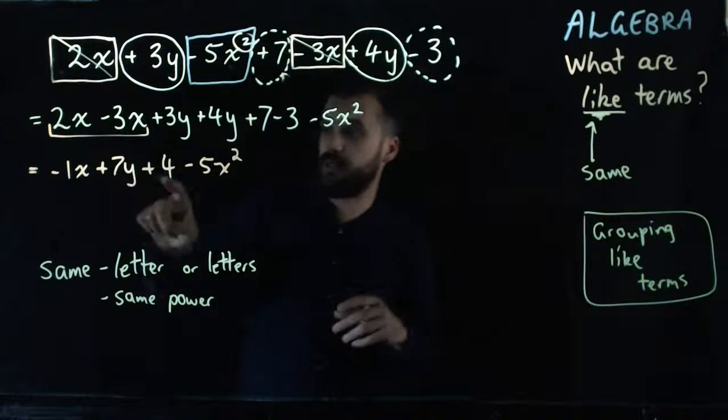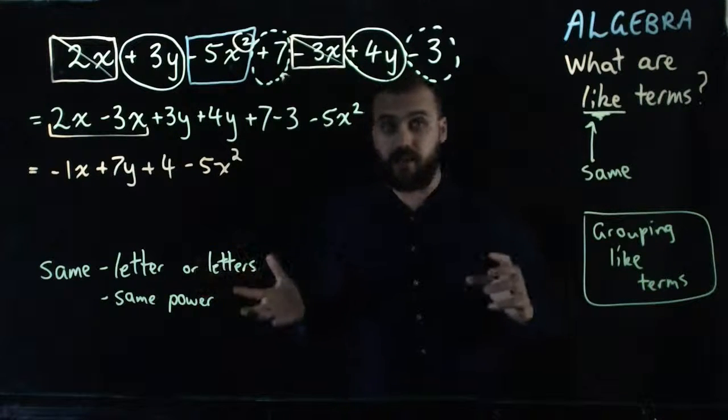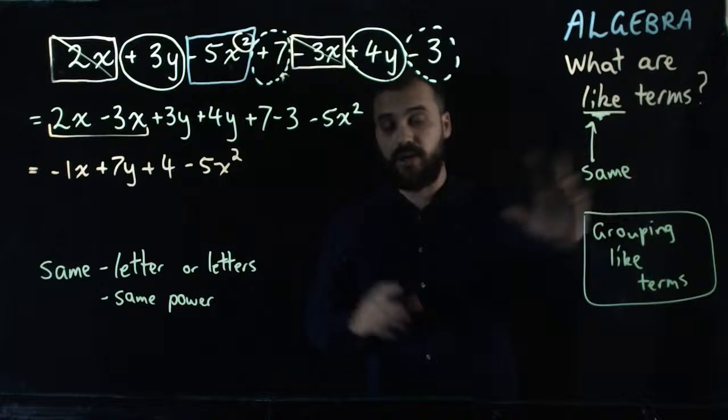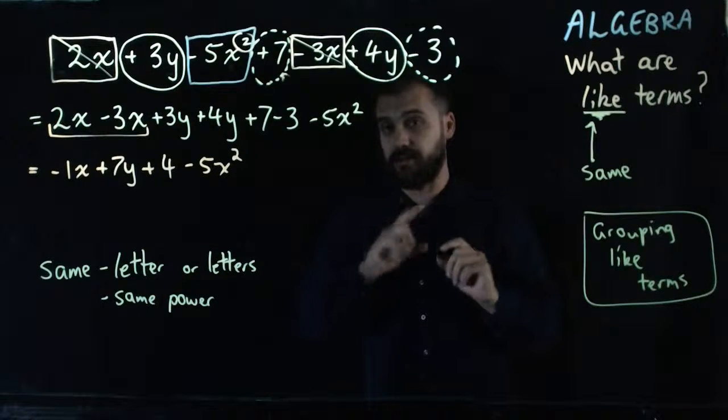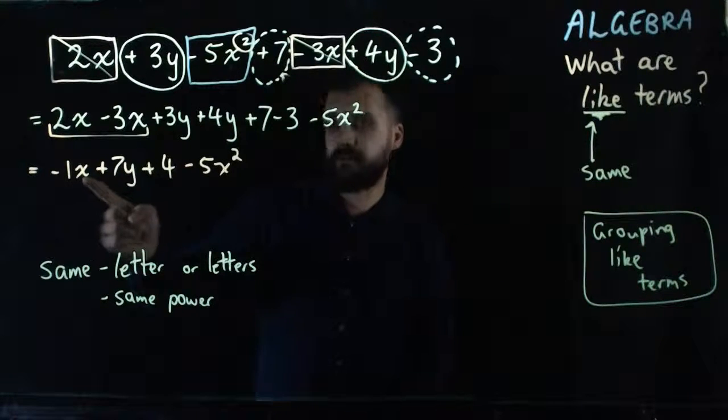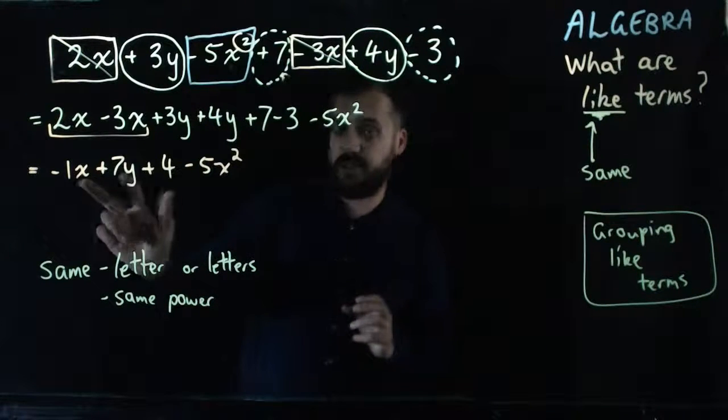Now, I know some of you will look at this, and you'll want to do 7y plus 4. And you're going to add them together, and you're going to get 11y. But you can't do that, because they're not like terms. You can only add like terms. It's kind of like minus 1 apple plus 7 oranges. You can't add apples and oranges. They're different things.